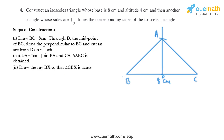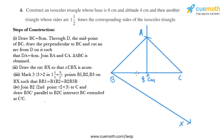In the next step, we need to draw a ray BX that makes an acute angle with BC. We'll draw a line and name it BX, so angle CBX is an acute angle. Now we need to mark three points B1, B2, B3 on BX, and after that we need to join B2 to C.